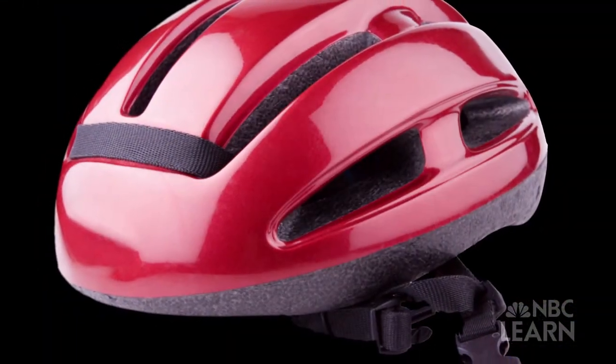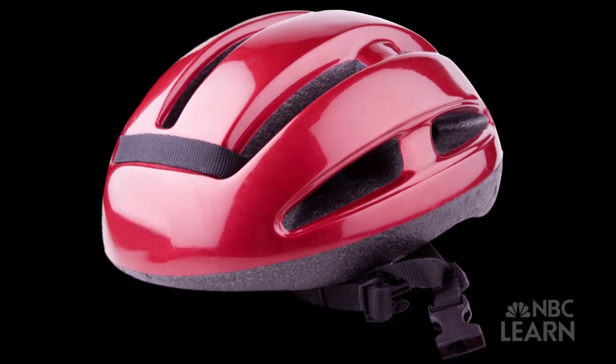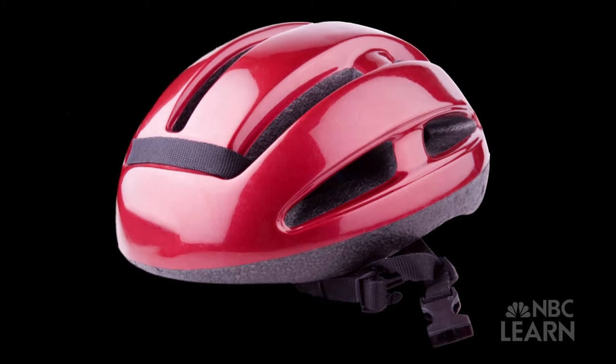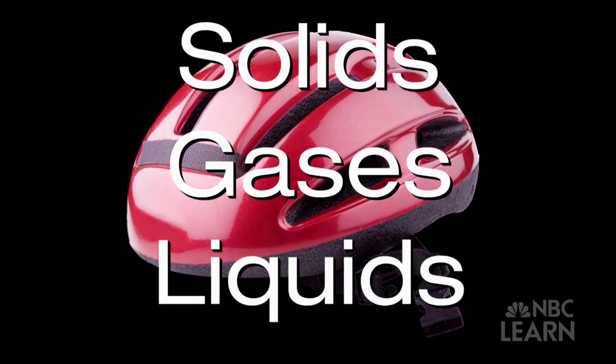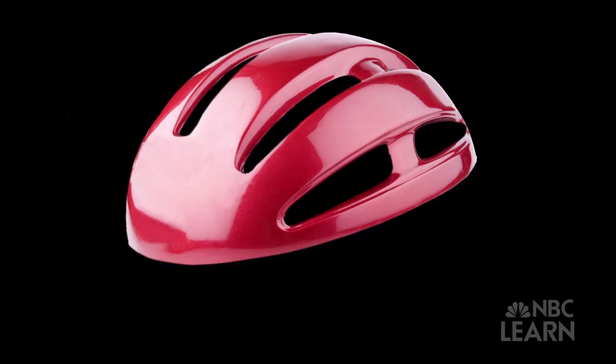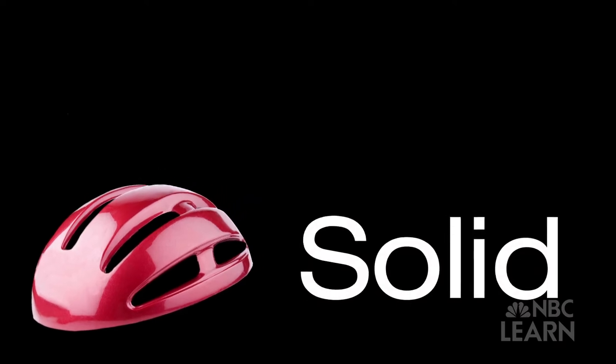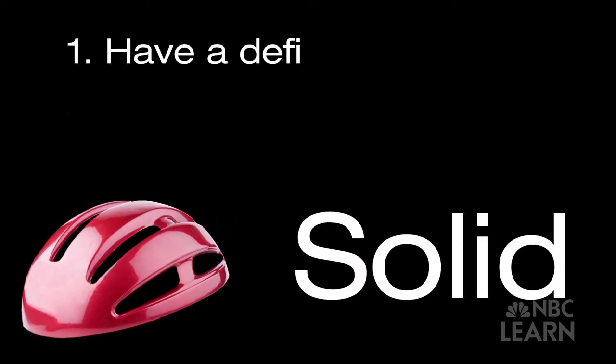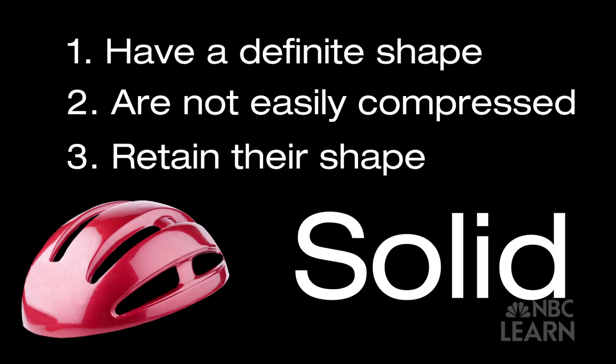While it might just look like a solid object, a bike helmet is actually composed of as many as three of the four states or phases of matter. Solids, gases, and sometimes liquids. The outermost layer of a bike helmet is a hard plastic shell. This shell is an example of a solid. Solids have a definite shape and are not easily compressed, and retain their shape until something such as a crash causes them to deform.